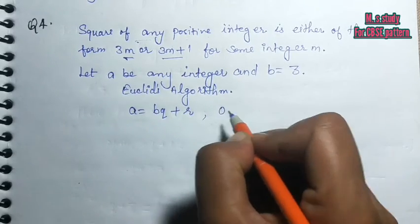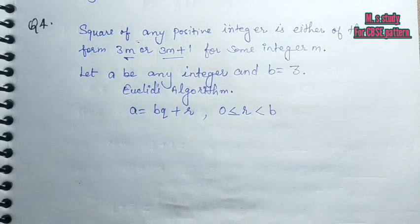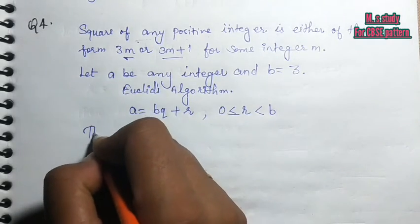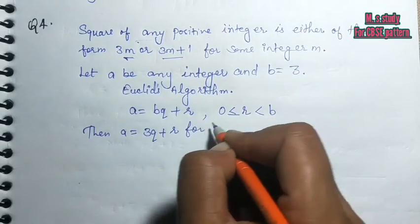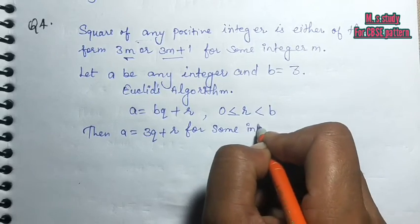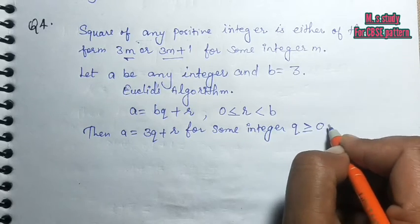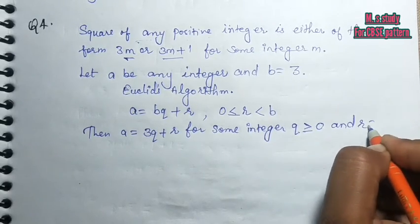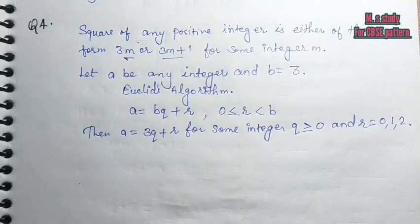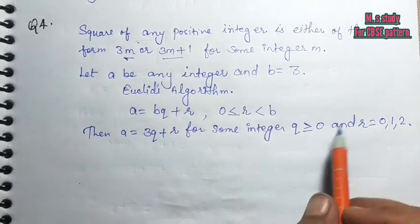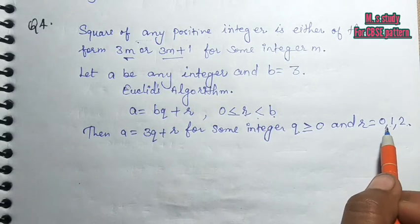Where R is zero or greater, but less than B. So if we use A equals 3Q plus R, then A equals 3Q plus R and R equals 0, 1 or 2. Because we have supposed B equals 3, and we have told that the remainder R is less than B. So if B is 3, then the remainder is 0, 1 or 2.